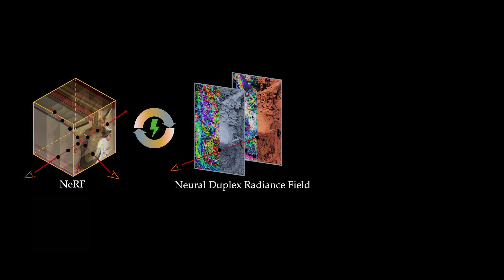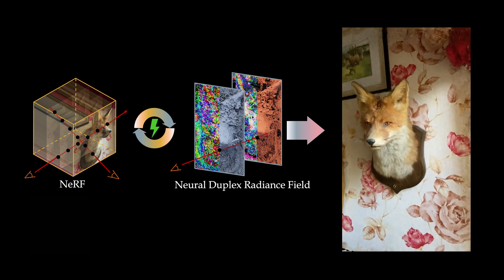In this paper, we propose a simple and fast approach to distill and bake NeRF into highly efficient mesh-based neural representations, duplex radiance fields, which enables real-time rendering.